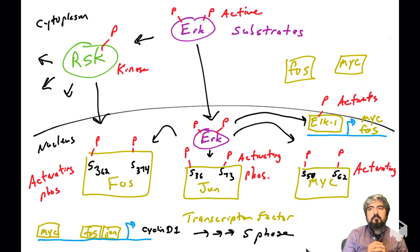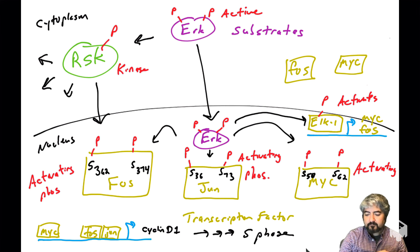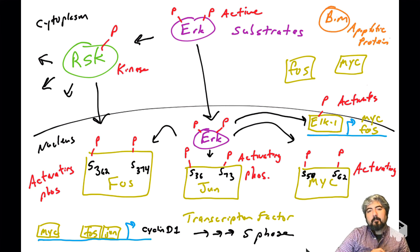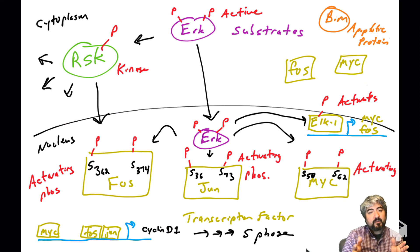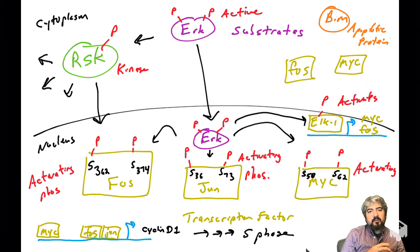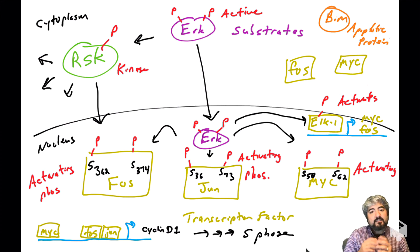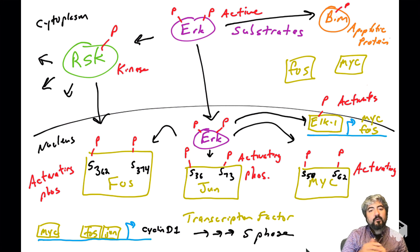One more thing ERK can phosphorylate and regulate — and this has nothing to do with the cell cycle — is a protein called BIM. When ERK is phosphorylating transcription factors, it's playing a role in regulating proliferation. But BIM is not a protein about moving cells through the cell cycle. BIM is an apoptotic protein — in fact, a pro-apoptotic protein. BIM likes to trigger apoptosis when it's functioning. So BIM is a pro-apoptotic protein, and ERK can phosphorylate BIM. What do you think this phosphorylation does to BIM?